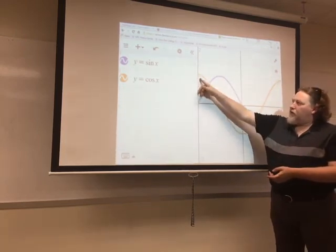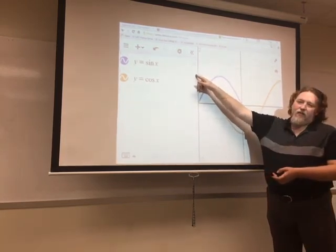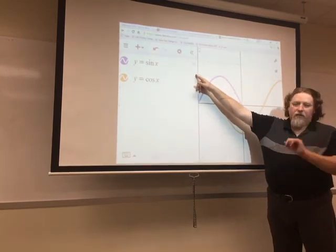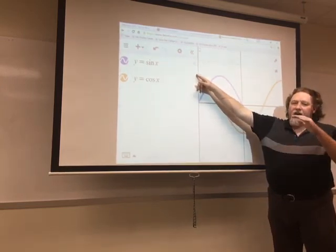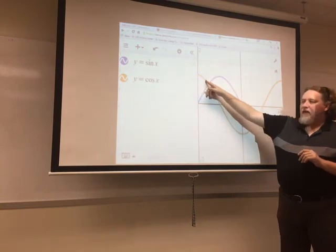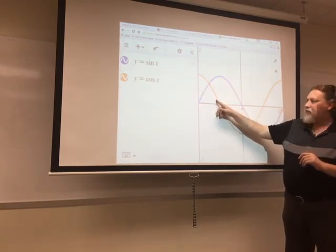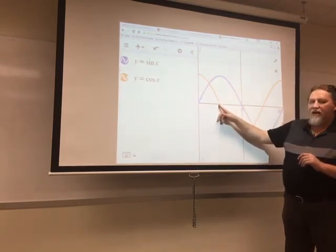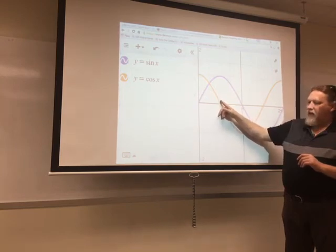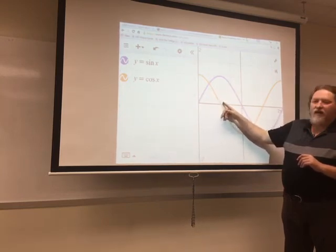When x is 0, cosine has its biggest value of 1. Then, if you look at the unit circle, as your angle gets bigger and bigger, the value of cosine gets smaller and smaller. Right here at pi over 2, cosine has its smallest value, well, smallest size. It's 0.